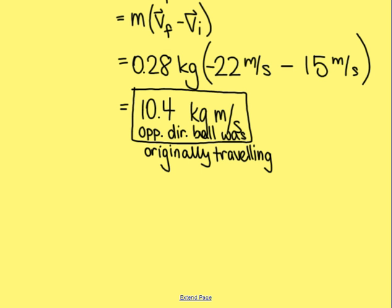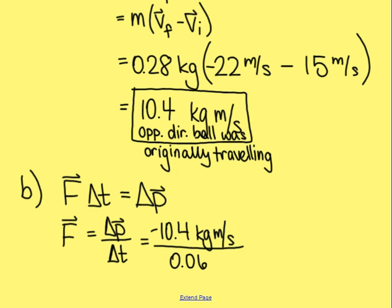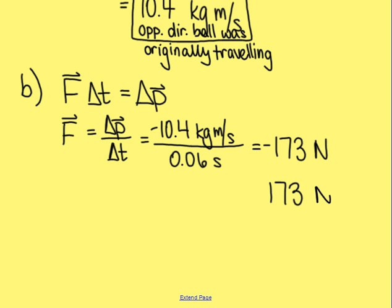Part B asks us to find the force. Using force equals change in momentum divided by time: the change in momentum is −10.4 kilogram meters per second, and the contact time was 0.06 seconds. This gives a force of −173 newtons. However, the problem asks for the magnitude of the average force, and magnitudes cannot be negative, so the answer is 173 newtons.